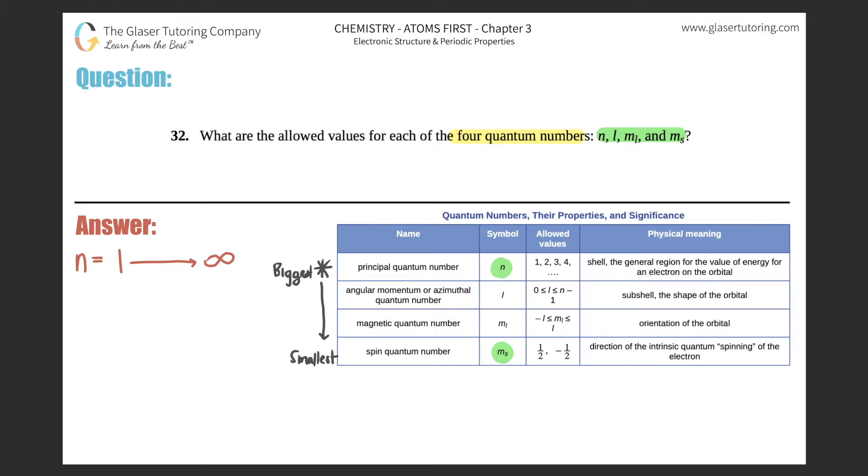Second is the l, which is either called angular momentum, the secondary quantum number, or the azimuthal quantum number. This follows suit with what your n number is, so you have to figure out what your n number is first because then you can find out your l values. The l value is anything from zero up until n minus one.